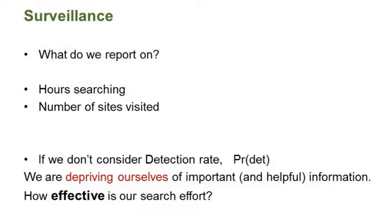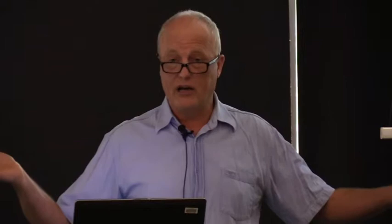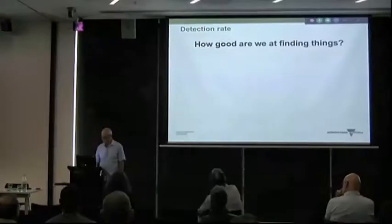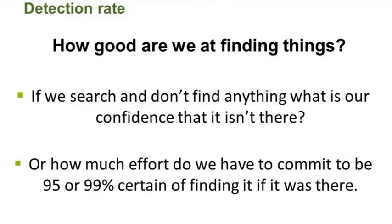Coming back to surveillance and plant pests — what do we report on when we go out and look at something? Years ago we reported on the number of hours spent looking or the number of visits. But that doesn't tell us one key factor: how effective are we? We could spend 200 hours looking for something, but that doesn't tell us the probability of finding it. How good are we at finding things? If we search and don't find anything — these are vital questions for surveillance, for area of freedom. If we search and don't find something, how confident are we that it was not there?